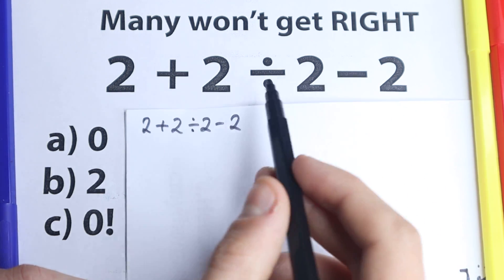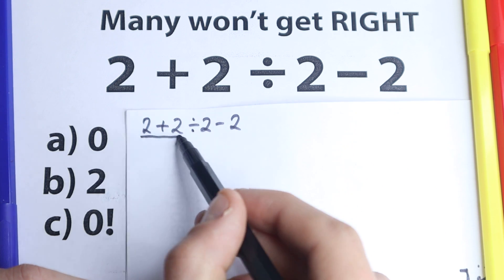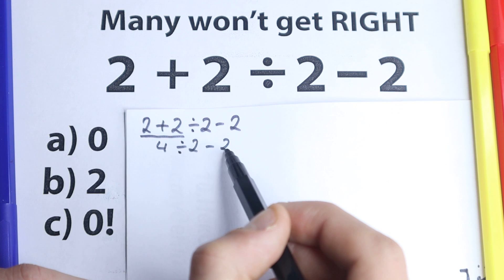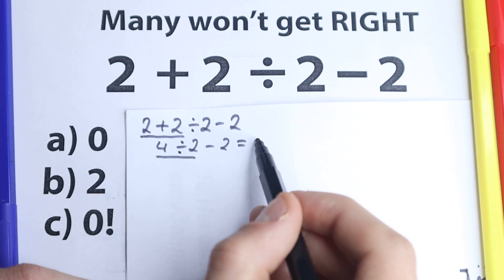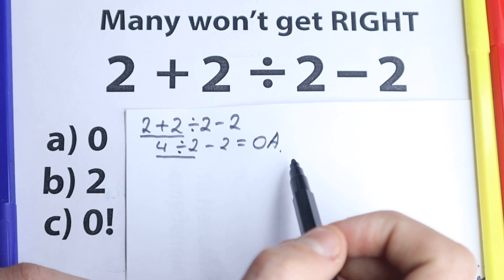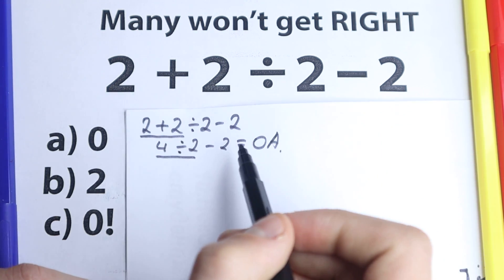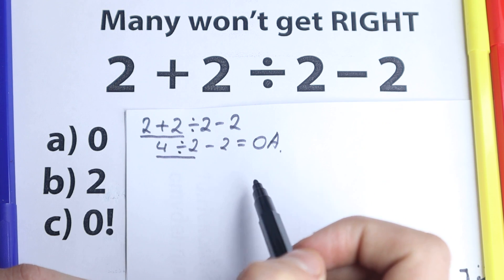So we have like 2 plus 2, that's 4, 4 divided by 2 and minus 2. So 4 divided by 2, we have 2, 2 minus 2, we have 0. So it looks like option A is correct, and they say, okay, I go to the next question, option A is the correct answer.